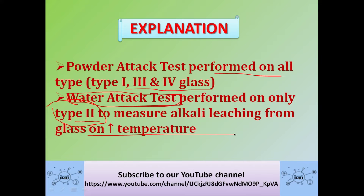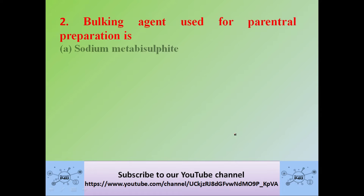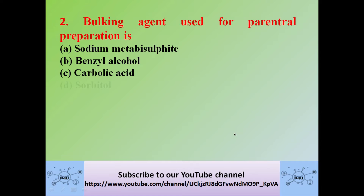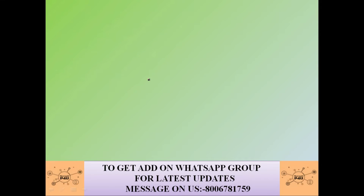Next question: the bulking agent used for parenteral preparation is — option A: sodium metabisulfite, option B: benzyl alcohol, option C: carbolic acid, option D: sorbitol. The correct answer is sorbitol, which is used as a bulking agent in parenteral preparation.